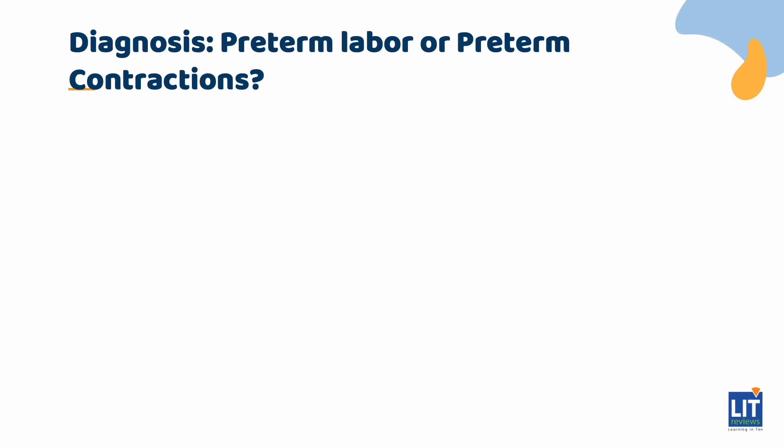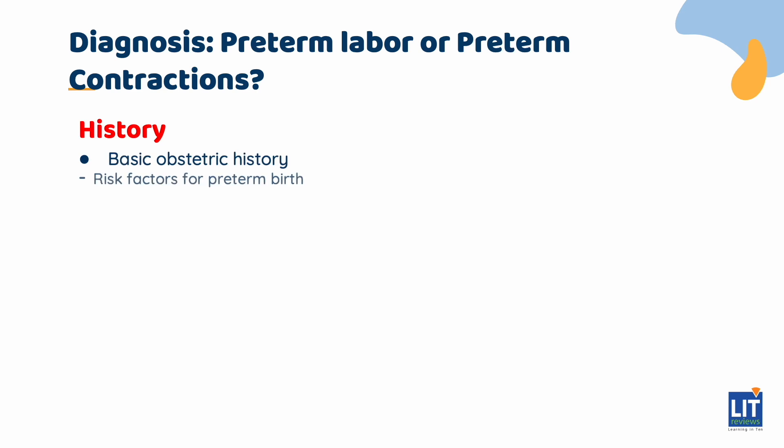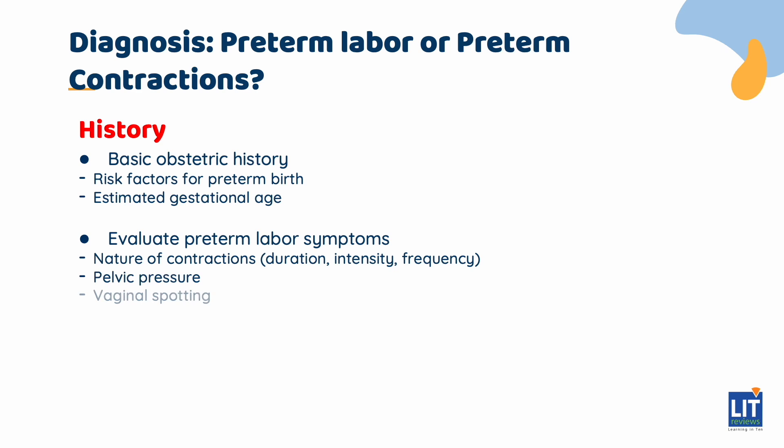Imagine you are in the labour and delivery unit and a woman presents at 33 weeks of gestation complaining of crampy contraction pains. You immediately think of preterm labour versus preterm contractions. To evaluate further, start with the history — a basic obstetric history including risk factors for preterm birth and estimated gestational age. Then evaluate the preterm labour symptoms: ask about the nature of the contractions, namely the duration, intensity, and frequency.